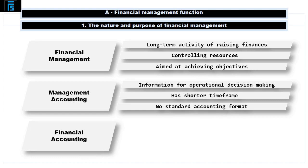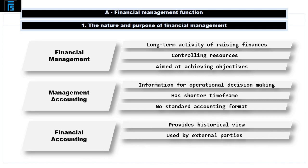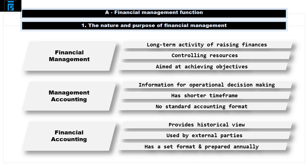Financial accounting, in contrast, gives a historical view of the company. It is also used by parties external to the organisation, such as government bodies, potential investors and financial institutions. It does not provide detailed information for operational decision making, like management accounts. The financial accounts are usually prepared on an annual basis and give an overview of the position of the company. They are important when seeking external sources of finance, such as bank loans or private investment. The format of the financial accounts is set by international standards, and financial accounts usually must be produced annually under company law.